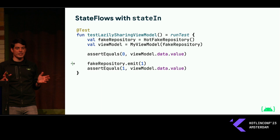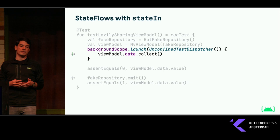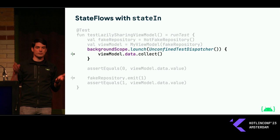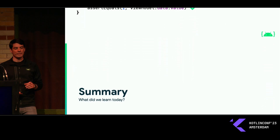So what can we do if we don't want to change our implementation from stateIn, which is very nice, concise, and familiar? We can just create a fake collector. To make sure we have someone collecting it and that stateIn will be active during the test, we launch a new coroutine to collect from the state flow and just ignore all those values. We use backgroundScope to do this so that the collecting coroutine will be shut down automatically at the end of the test. Running our test again, we can now see that this started working.